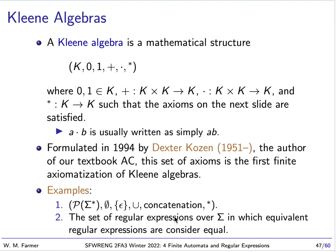Let's talk about a kind of algebraic structure called a Kleene algebra. A Kleene algebra has a set of values K with a zero and one as members of K, a binary function plus over K, another binary function dot over K, and a unary function star over K. It satisfies certain axioms, and usually we just write A dot B as AB.